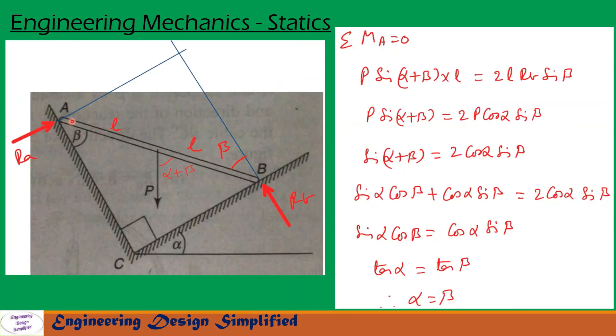So on this bar AB, there are three forces acting RA, P and RB. Now let us take moments about A. So RA won't create any moment about A. So P and RB will create moments.